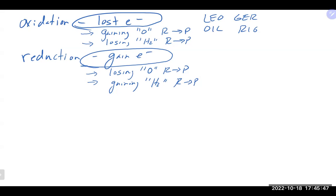Oxidation and reduction always occur together. If something is being oxidized, something else is being reduced, and vice versa. So if you can figure out which one is happening to one species, the other species must be doing the opposite — which makes it quite convenient.